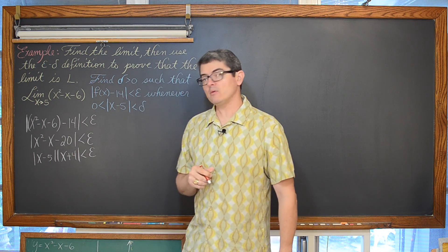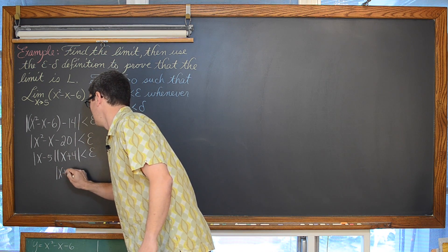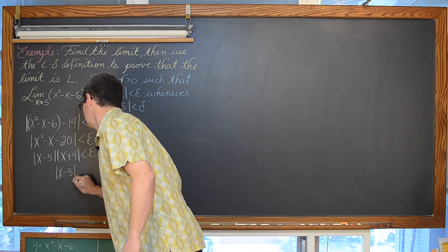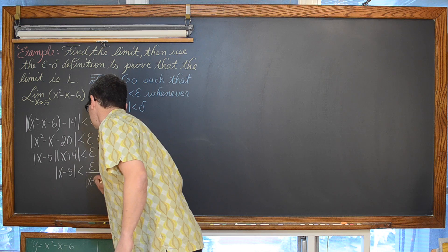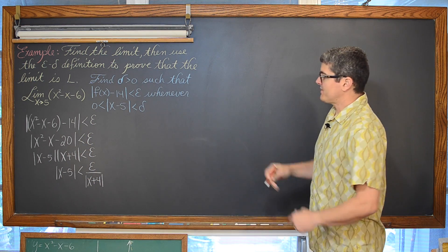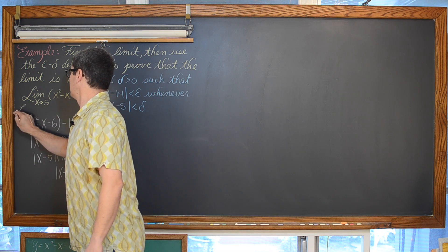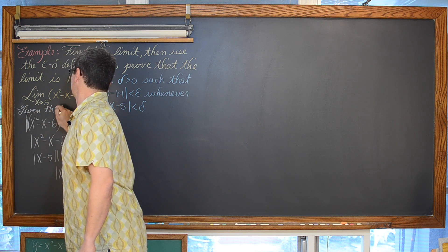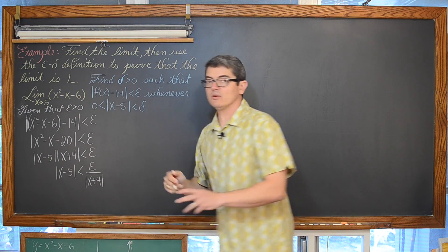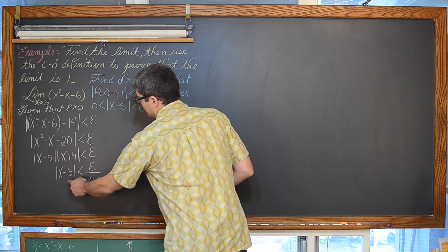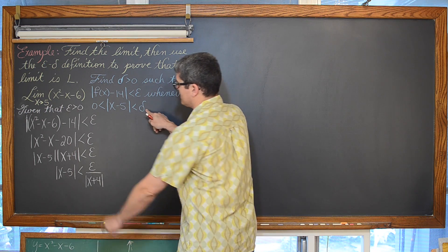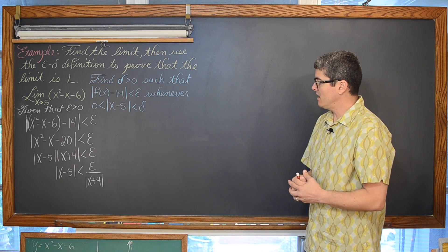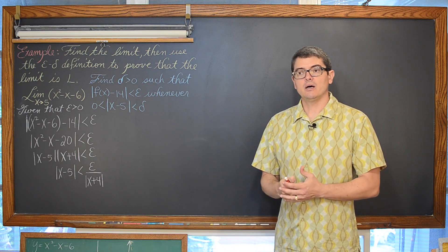We divide both sides by the absolute value of x plus 4. We can see now that there is a problem with this: yes, we have the absolute value of x minus 5 by itself, but it is less than epsilon over the absolute value of x plus 4. We don't have a direct relationship between these two variables, and we need that to do our proof.